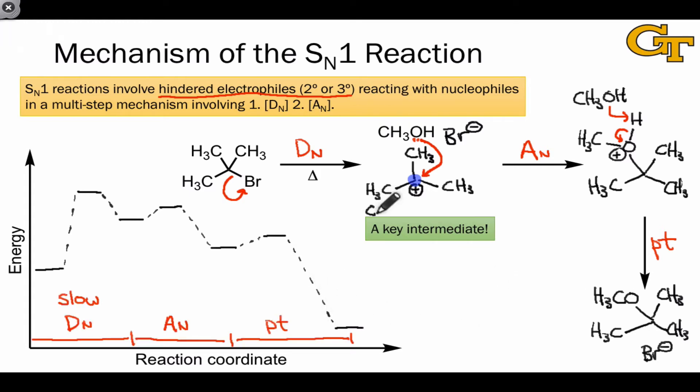It's hard to overstate the importance of this carbocation intermediate to the mechanism of SN1. Carbocation stability helps us explain a lot of the preferences of the SN1 reaction in terms of electrophiles.